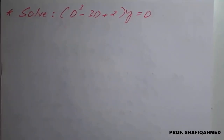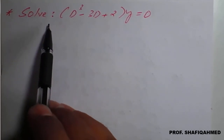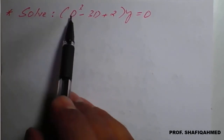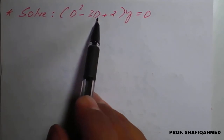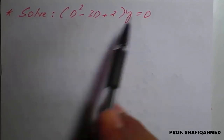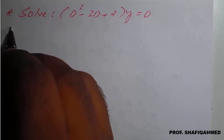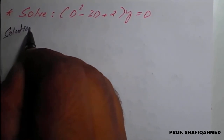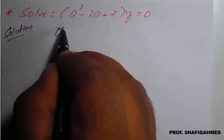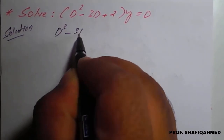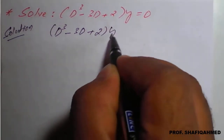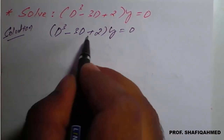Hello everyone. In this lecture we'll see a problem on homogeneous differential equation. We'll see a solution for the given problem: solve (D³ - 3D + 2)y = 0. The given equation we have to take as D³ - 3D + 2 of y equal to 0.